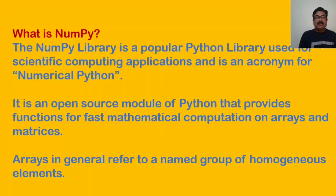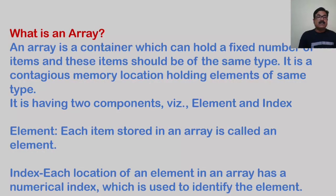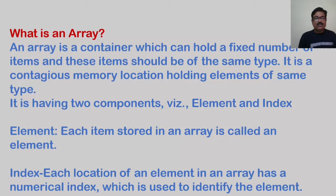In general, an array refers to a named group of homogeneous elements — meaning the same type of elements can be stored in an array. An array is a container that can hold a fixed number of items and all items will be of the same type. It has two key elements: element and index. An element is each item stored in the array, and an index is the location from where you retrieve particular data. Under a single reference, several values can be stored, which is also known as an array subscript.